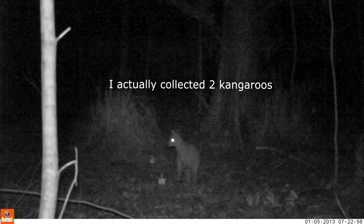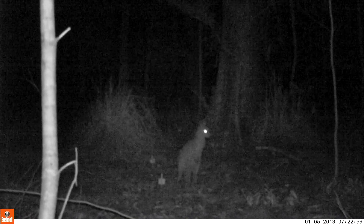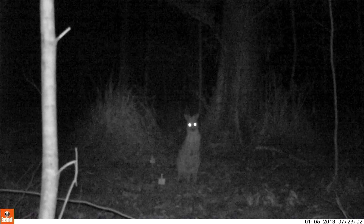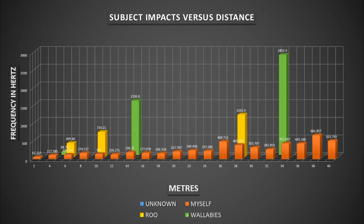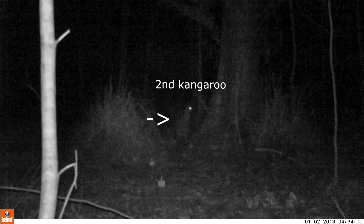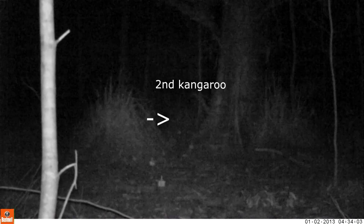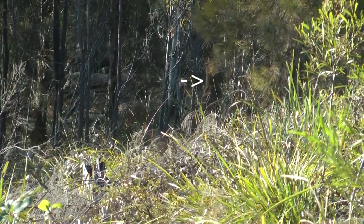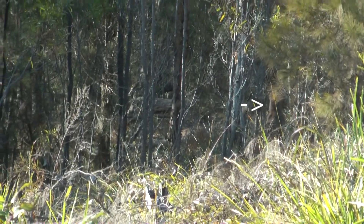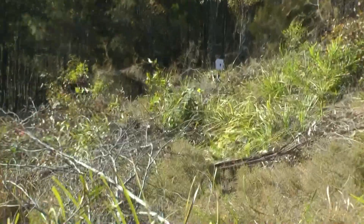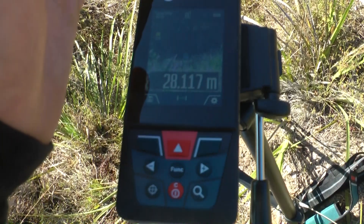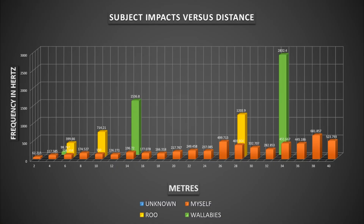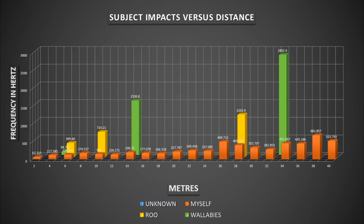I collected one of the kangaroo hopping impacts from the timestamp in a trail camera video, which was then used to locate the corresponding timestamp in the audio files. The other kangaroo we measured was in a live situation with the audio recorders hanging around my neck, using the laser measurer to measure the distance of the noted kangaroo hop. As you can see we probably need some more wallabies and kangaroos in our impact chart, but the difference between the subjects is clear.